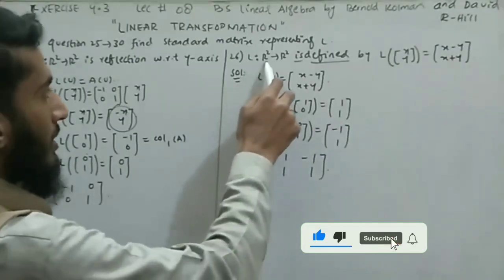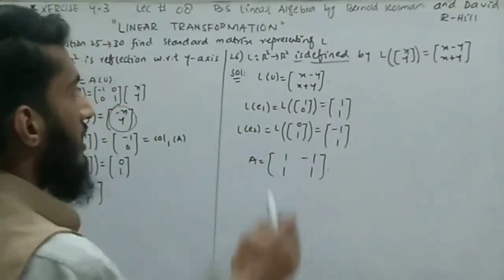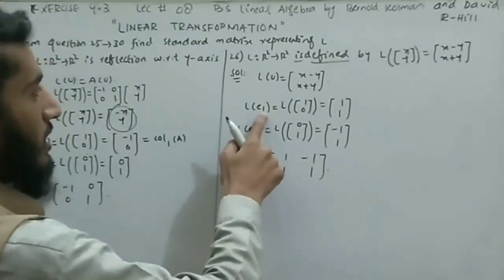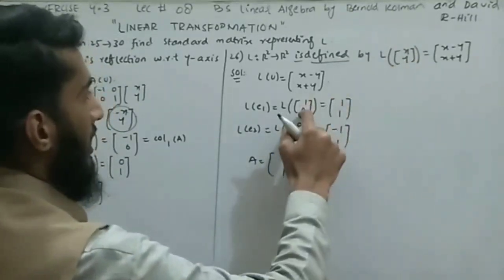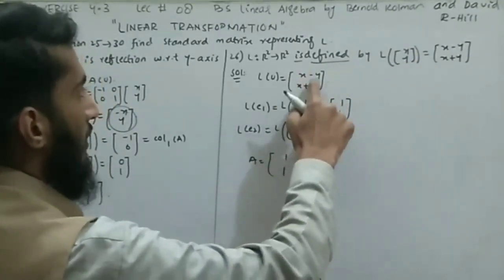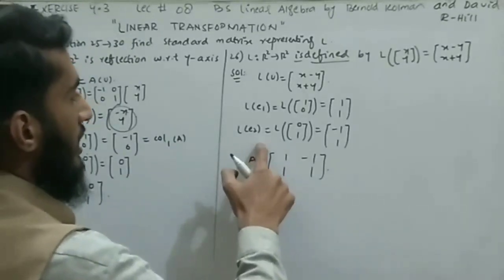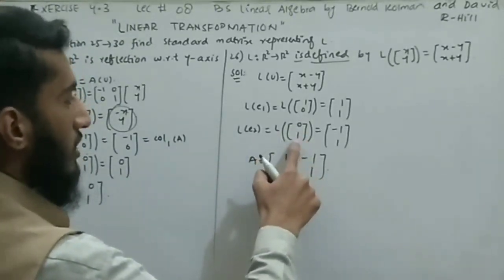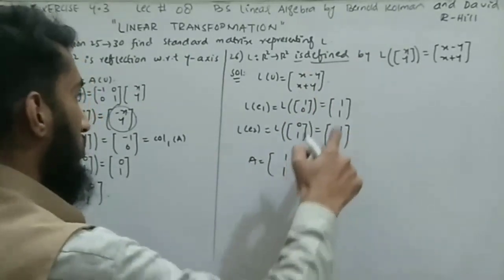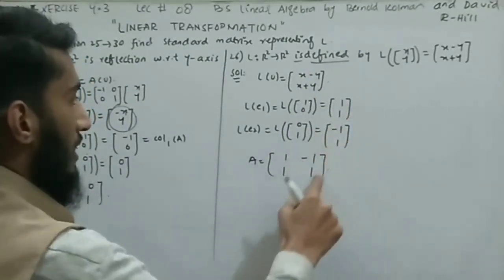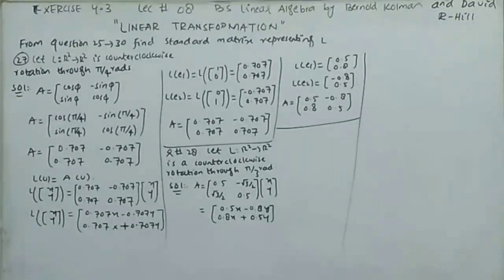Question 26: L is a linear transformation from R² to R² defined by L(x,y) = (x-y, x+y). For the first column, set x=1, y=0: L(e₁) = (1, 1). For the second column, set x=0, y=1: L(e₂) = (-1, 1). The required standard matrix is A = [1,-1; 1,1].